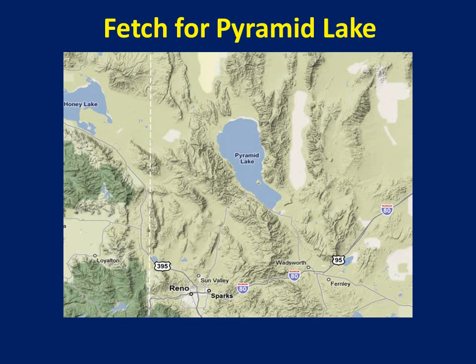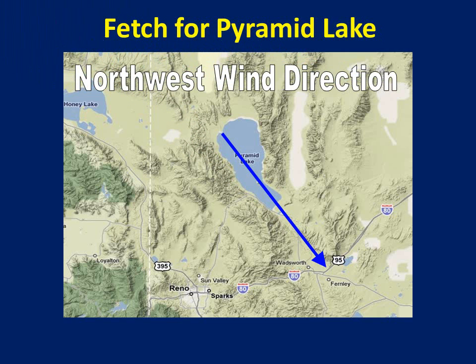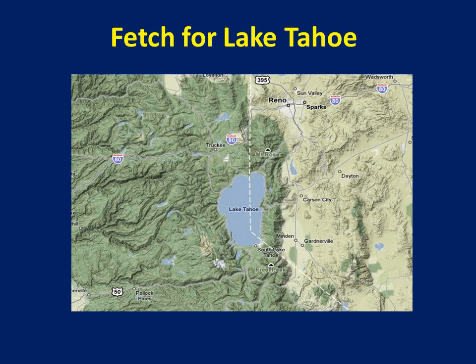The distance that an air mass travels over a body of water is called its fetch. The event on November 9th and 10th had a light north-to-northwest flow along Pyramid Lake's ideal fetch, which allowed lake effect snow to impact Nixon and the Pa-Ra range. For Lake Tahoe, a west wind along a shorter fetch of the lake resulted in lake effect snow across parts of Carson City and Minden. Although that is one of the shorter fetches, the very unstable atmosphere resulted in stronger snow showers.